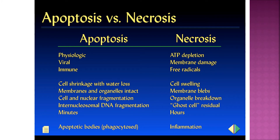Apoptosis can occur in both physiologic and pathologic conditions, whereas necrosis only occurs in pathologic conditions. The cell shrinks with water loss in apoptosis, but in necrosis the cell will swell. Apoptotic bodies are phagocytosed by surrounding cells or macrophages, whereas in necrosis there is inflammation to remove the dead cells.